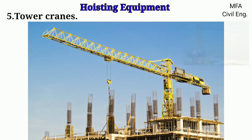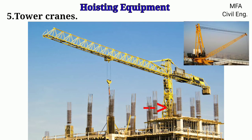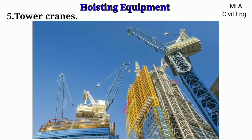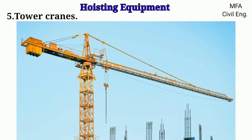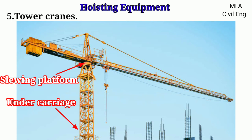Tower cranes are essentially a derrick crane mounted on a steel tower. They are usually used for industrial and residential high-rise buildings and are commonly used for the assembly of industrial plants and steel structures. The main parts of the tower crane are the undercarriage, swing platform, tower with operator's cabin, and jibs.